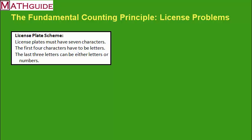The scheme means this is how the license plates are made in a fictitious state. So in this particular scheme, license plates have to have seven characters. That means there's seven spaces on the license plate. The first four characters have to be letters. The last three characters could be either letters or numbers. So that's what this license plate scheme is telling us. Let's figure out how this is going to work mathematically speaking.